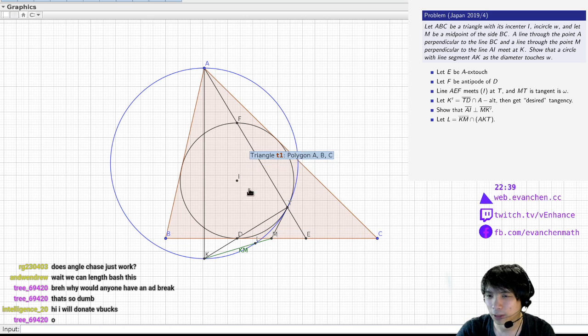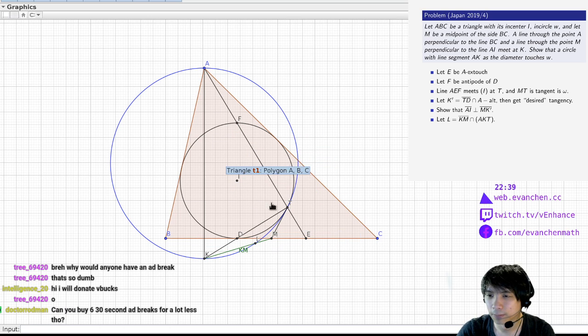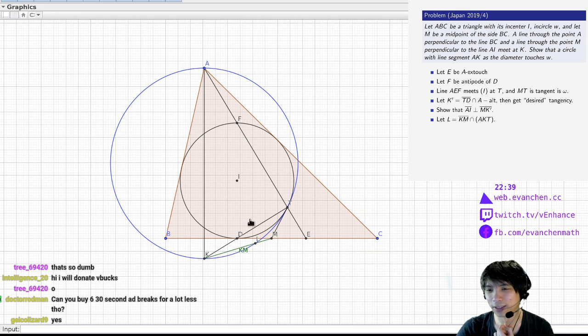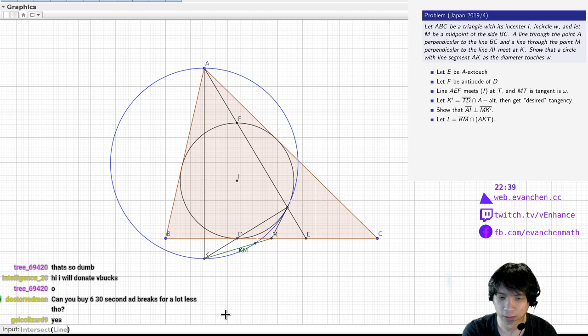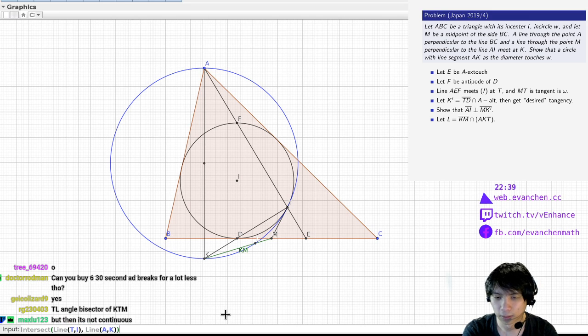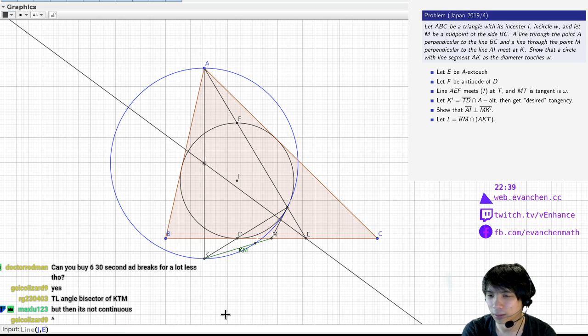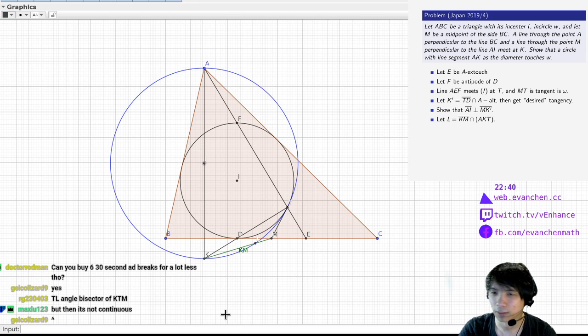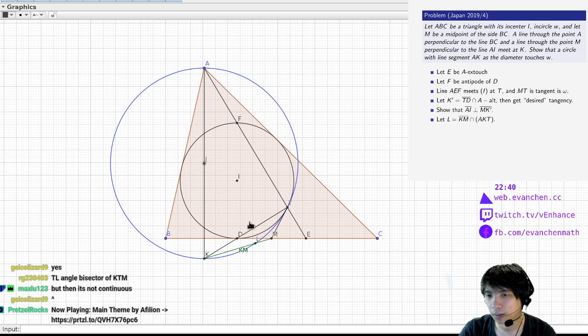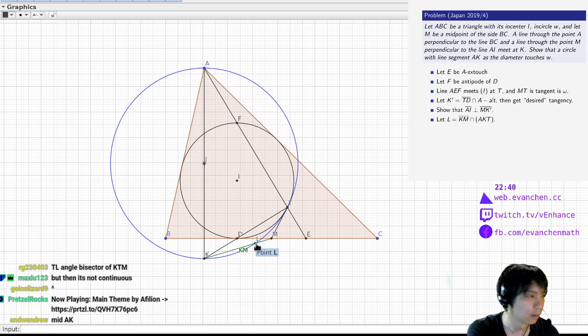Okay, well, I want to use homothety somehow. So FD... there's homothety here, it sends F here, D here, T goes to a point. Is that the midpoint of the altitude? No, it's not, right? No way. That's just the midpoint of AK, that doesn't really help me I guess.